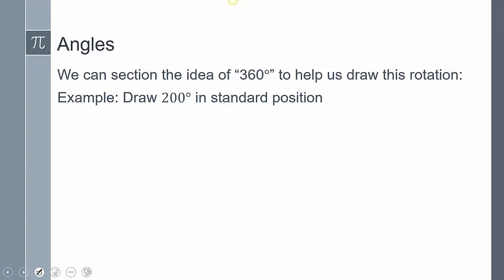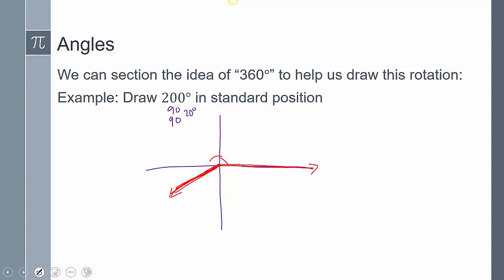Let's try another one. I need to think about how this breaks up. I know 90 and 90 gives me 180, and then I'm left with 20 degrees left over. So my initial side travels 90 degrees, then another 90 degrees, and then about 20 degrees left over. It's not perfectly accurate, but it's about right and that's okay.